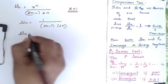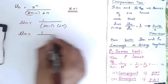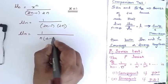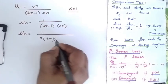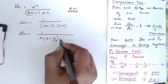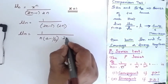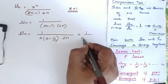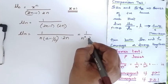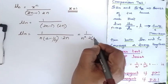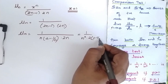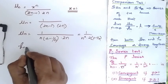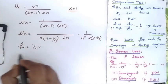My un is equal to 1 by (2n-1)(2n). Taking n commonly outside, this becomes 1 divided by n squared times 2 times (2 minus 1/n). So my vn is equal to 1 by n squared.